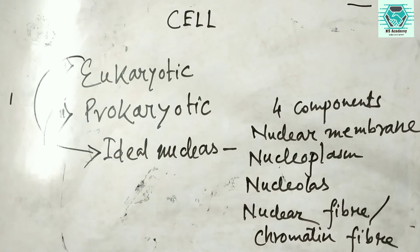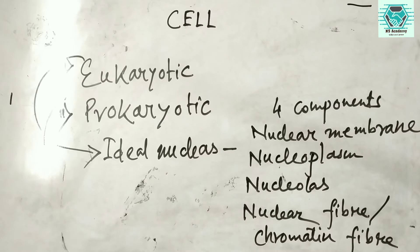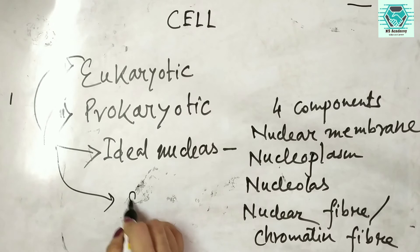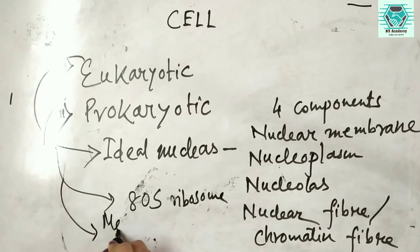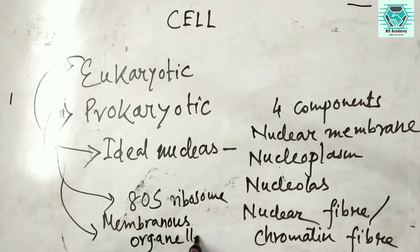So eukaryotic cells have this ideal nucleus. Not only that, but eukaryotic cells also have 80S ribosomes and membranous organelles, whereas prokaryotic cells are lacking all of these important characteristics.